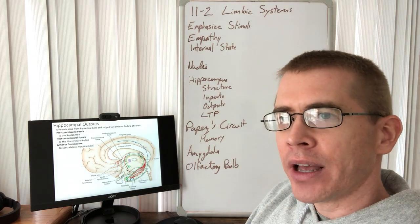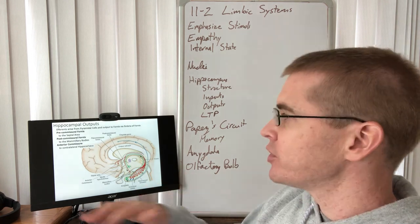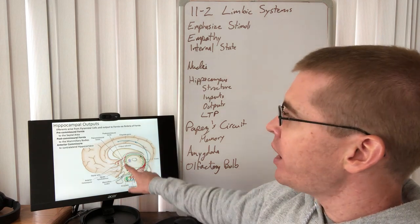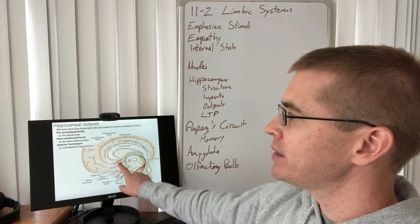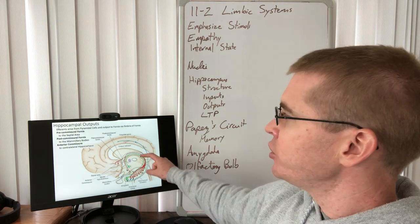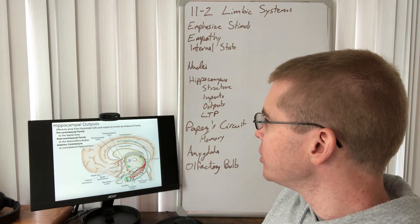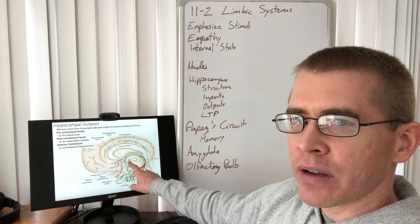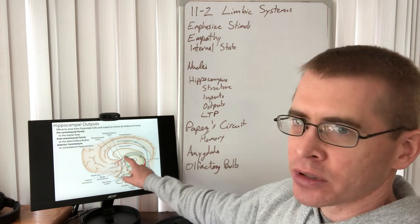So the fornix itself has a number of different targets and it has bi-directional fibers. So if it's going to the septal area, the septal area also has fibers traveling back to the hippocampus. But we can divide the targets of the hippocampus into pre-commissural and post-commissural fibers based on whether they extend anterior to the anterior commissure or posterior to the posterior commissure. The post-commissural travel to the mammillary bodies, pre-commissural to the septal nuclei. We also have some, not shown here, we have some pre-commissural fibers heading to the anterior nucleus of the thalamus.